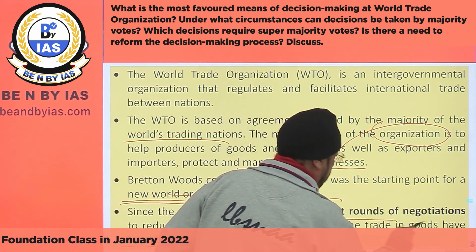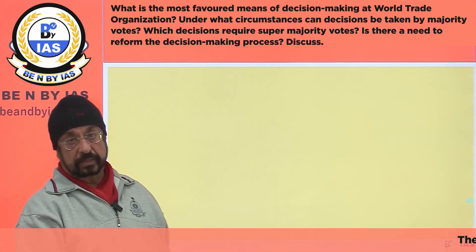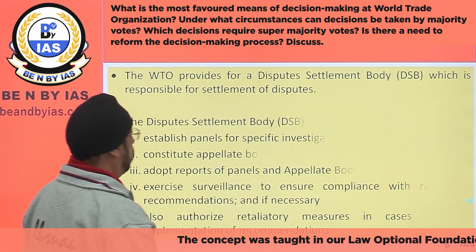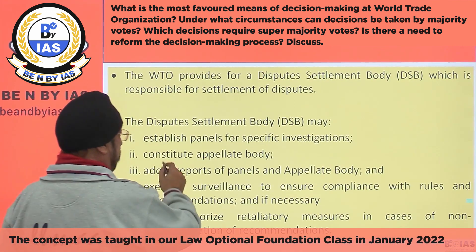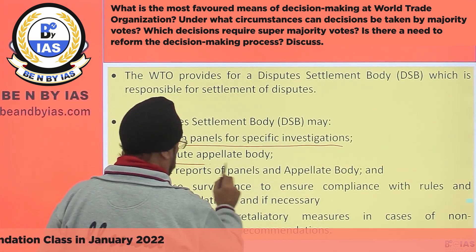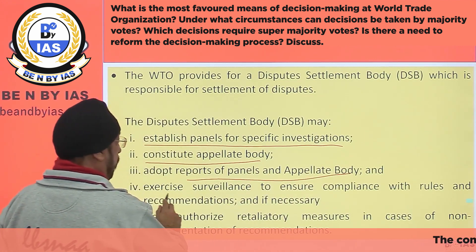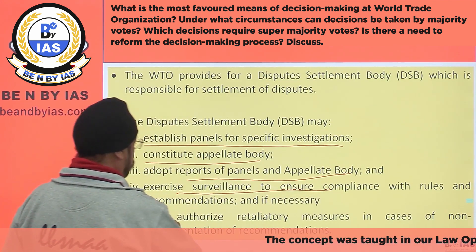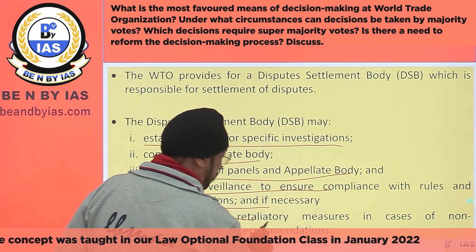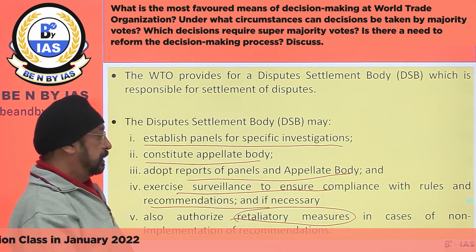The final round was the Uruguay Round. This is important because this is a new area which has been added, which is responsible for settlement of disputes: establishing panels for specific investigations, constituting an appellate body, adopting reports of panels and the appellate body, and exercising surveillance to ensure compliance with rules and recommendations — and also authorizing retaliatory measures in cases of non-implementation of recommendations.